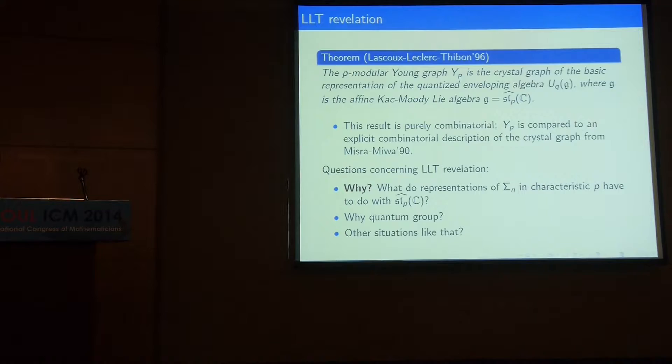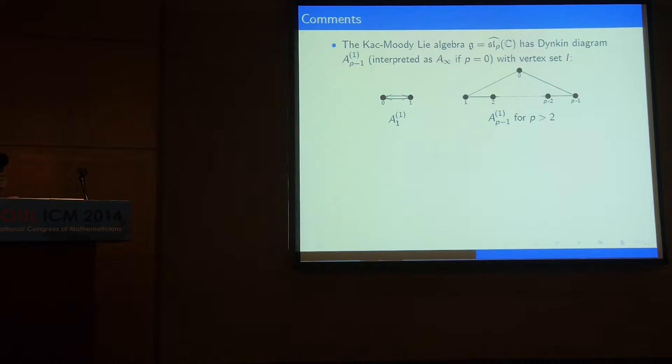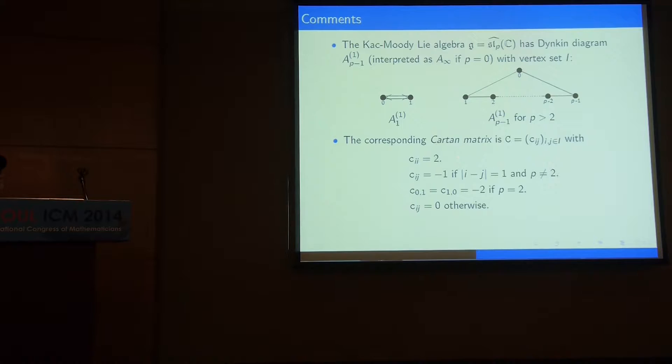The Kac-Moody Lie algebra has a Dynkin diagram which is just a cycle, and observe that this Dynkin diagram has vertices labeled by the set I, which before was the set of eigenvalues. The Dynkin diagram is equivalent to the generalized Cartan matrix; in Kac notation this is type affine A_{P-1}^{(1)}. The basic module is the one corresponding to the fundamental dominant weight lambda_0, which corresponds to the affine vertex 0.